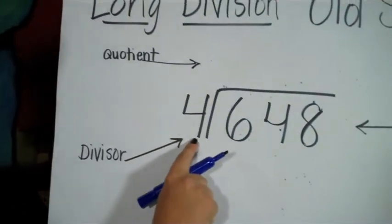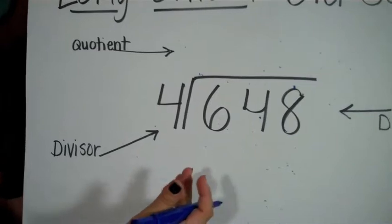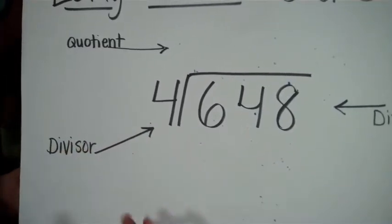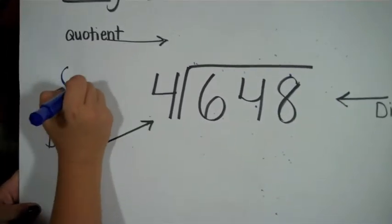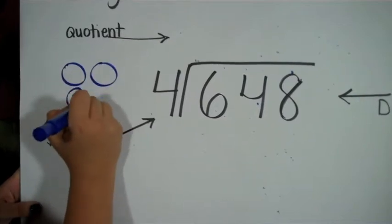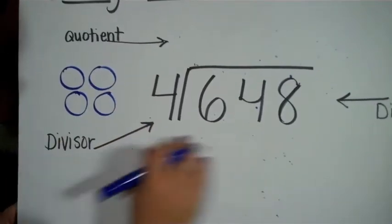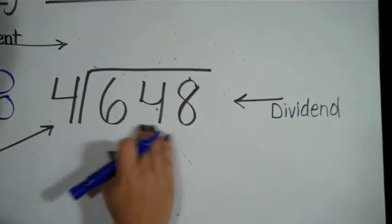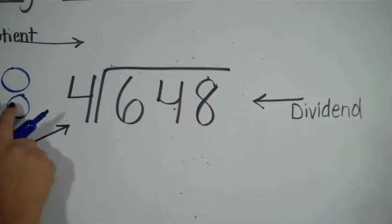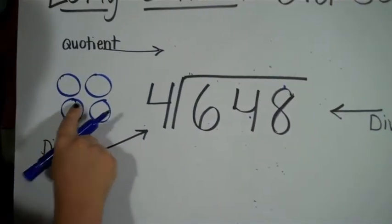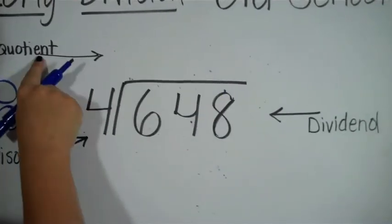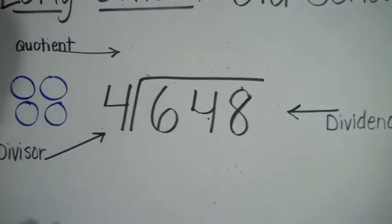The number on the outside here is called the divisor. This tells how many groups we're going to divide it into. So this one is like saying I'm dividing this into four different groups. The number here is called the dividend. That's how many things will be divided into four different groups. The answer we're going to get is called the quotient when you're doing a division problem.